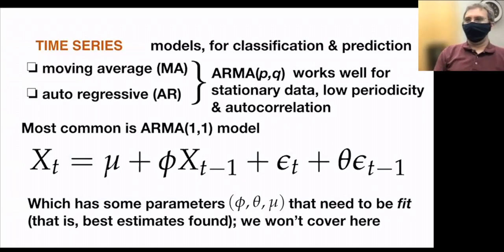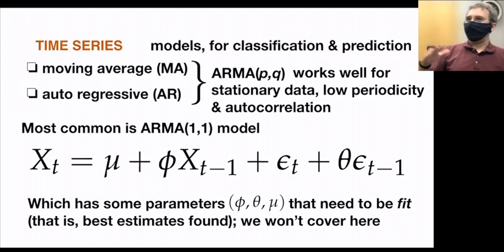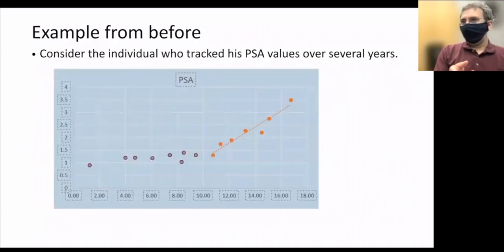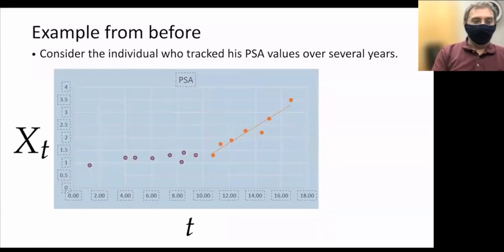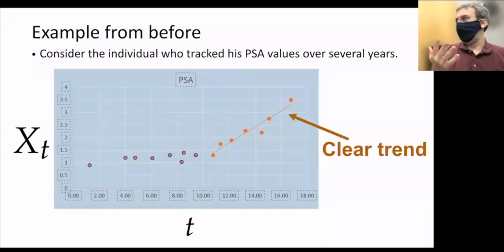This has parameters you fit based on an observed time series, and you often use existing software packages. For example, consider an individual's PSA values measured over many years — the mean was stable for a while, but at some point there's a clear upward trend. Looking at PSA values X at time points T, an ARMA model would hopefully pick that trend up.